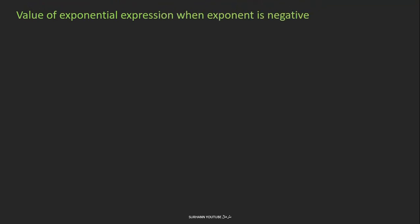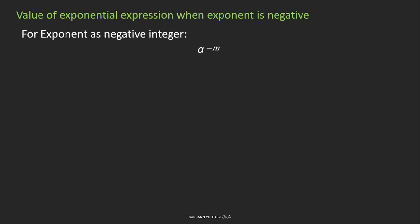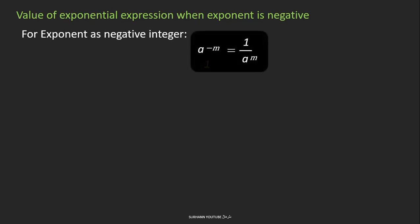Now, what will be the value of an exponential expression when the exponent is negative? For an exponent with a negative integer, we have base value 'a' to the power minus m. In mathematics, if a denominator is not written, we consider it as 1. If we take the inverse of this value, we get 1 over a to the power m. Remember this — we will use this expression in the exercise.